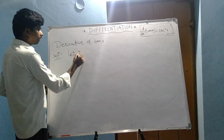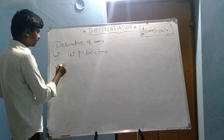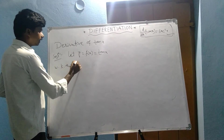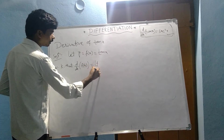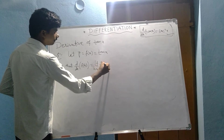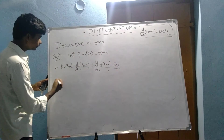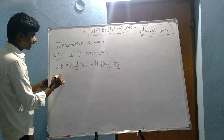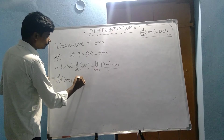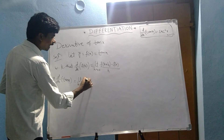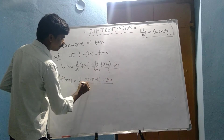Let y equal f(x) equal tan x. We know that d/dx of f(x) equals the limit as h tends to 0 of [f(x+h) minus f(x)] divided by h. So d/dx of tan x equals the limit as h tends to 0 of [tan(x+h) minus tan x] divided by h.